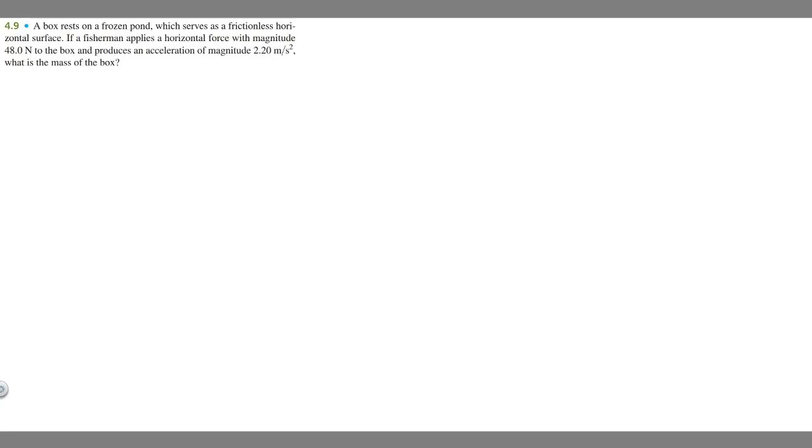In this problem, we're told a box rests on a frozen pond, which serves as a frictionless horizontal surface. If a fisherman applies a horizontal force with a magnitude of 48 newtons to the box and produces an acceleration of magnitude 2.2 meters per second squared, what is the mass of the box?